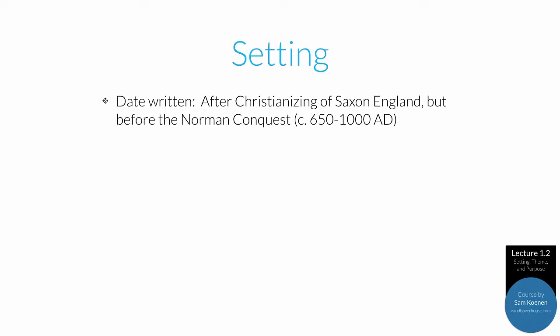Beowulf is written in what is called Old English, which shouldn't be confused with Shakespeare's language — which many people mistakenly call Old English. Shakespeare actually wrote in what's called Early Modern English, a form of English that is remarkably easy for modern speakers to understand. Beowulf, by contrast, is written in an early form of English that requires special training for us to understand.